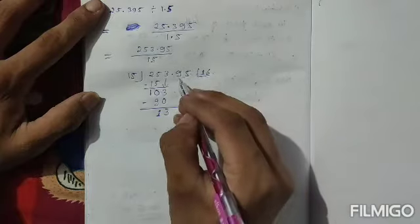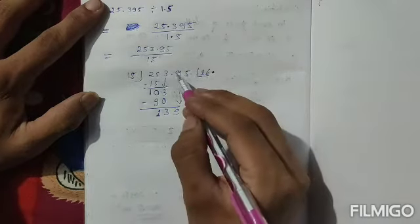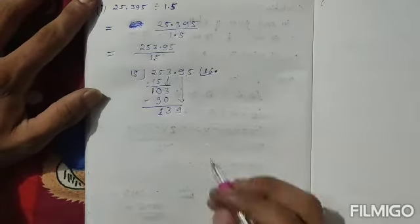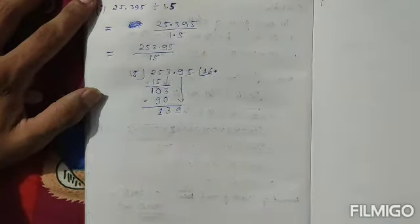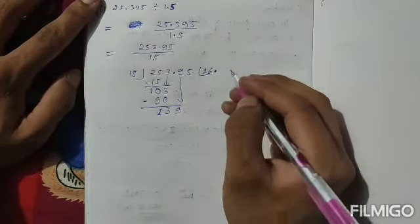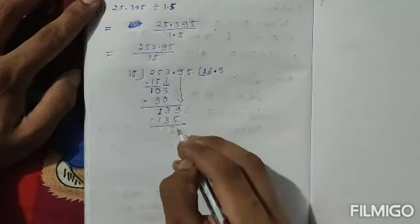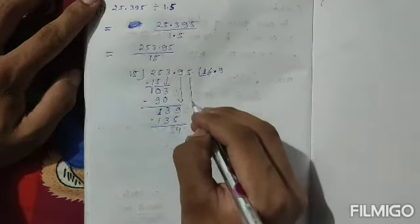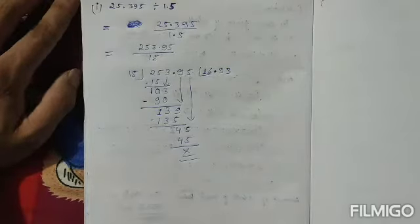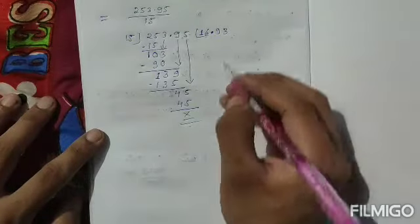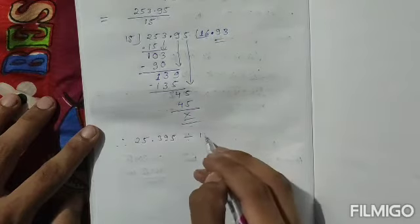Now 9 comes down. Since the number behind the decimal has started coming down, I have to put the decimal point immediately. It goes 9 times, giving 135. Subtracting gives remainder 4. Then 5 comes down, making 45. 15 goes into 45 three times exactly, so the remainder is 0. The answer is 16.93.